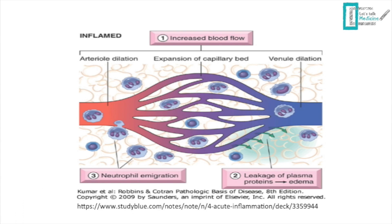During acute inflammation there are three key steps: increased blood flow causing erythema or redness; leakage of plasma proteins leading to edema and swelling from fluid in the interstitium; and neutrophil immigration, which destroys the microbe or relieves the inflammatory trigger. Neutrophil migration and macrophage roles will be detailed in a separate video.